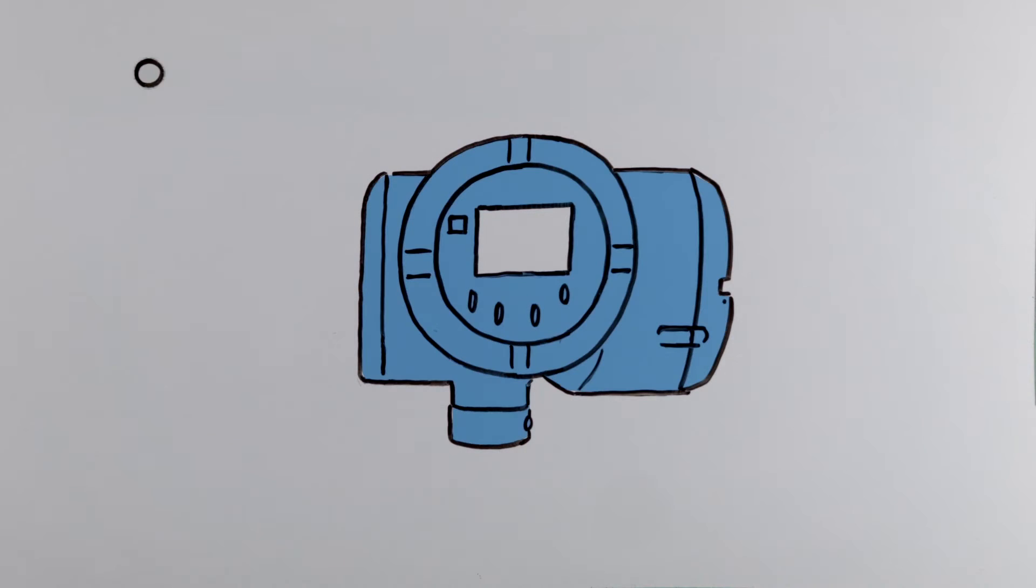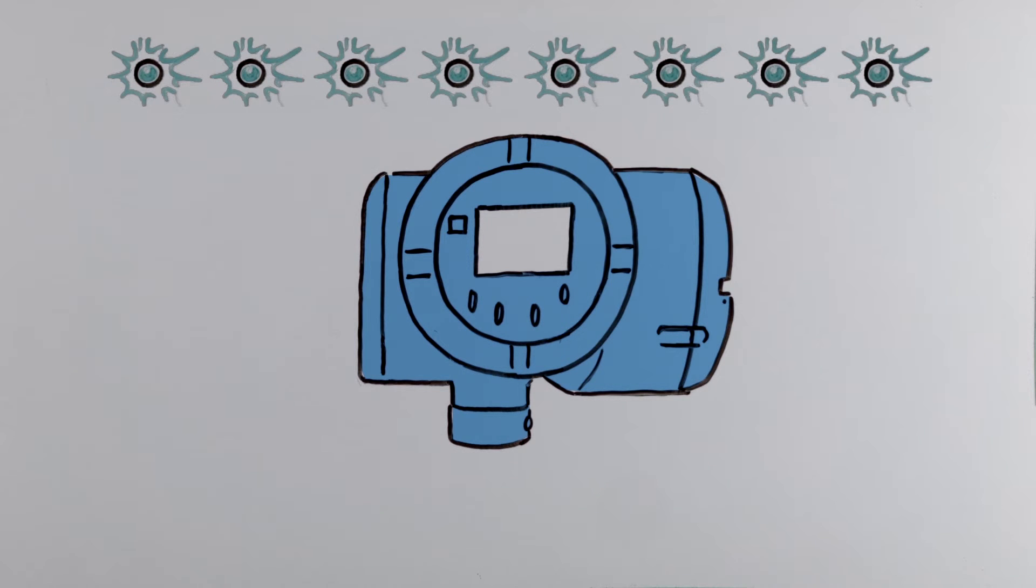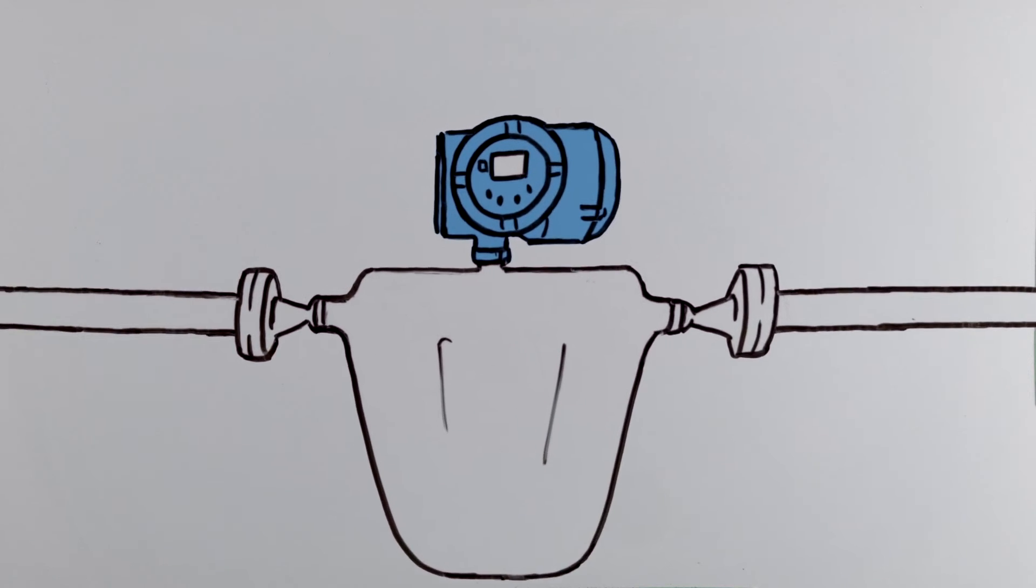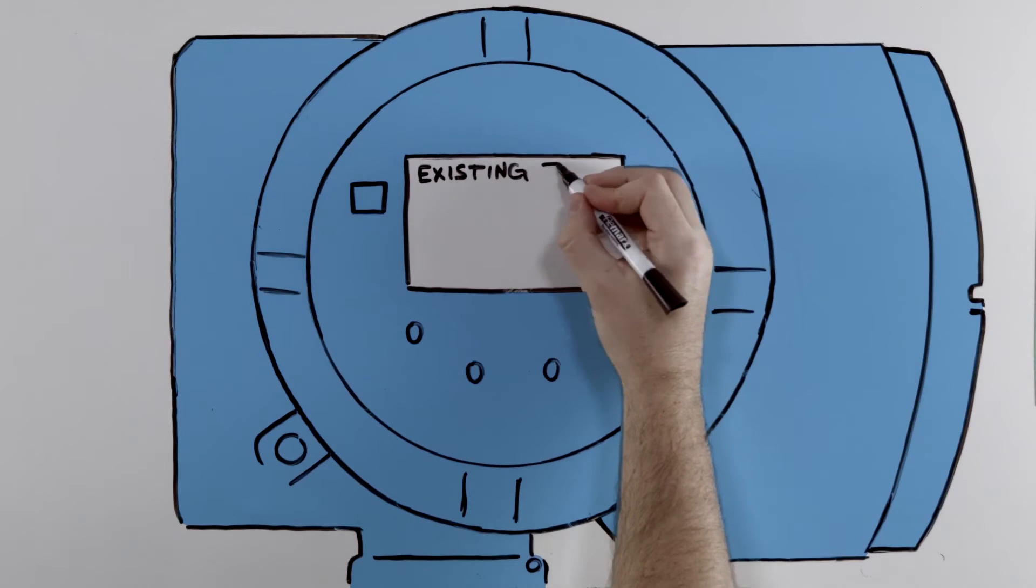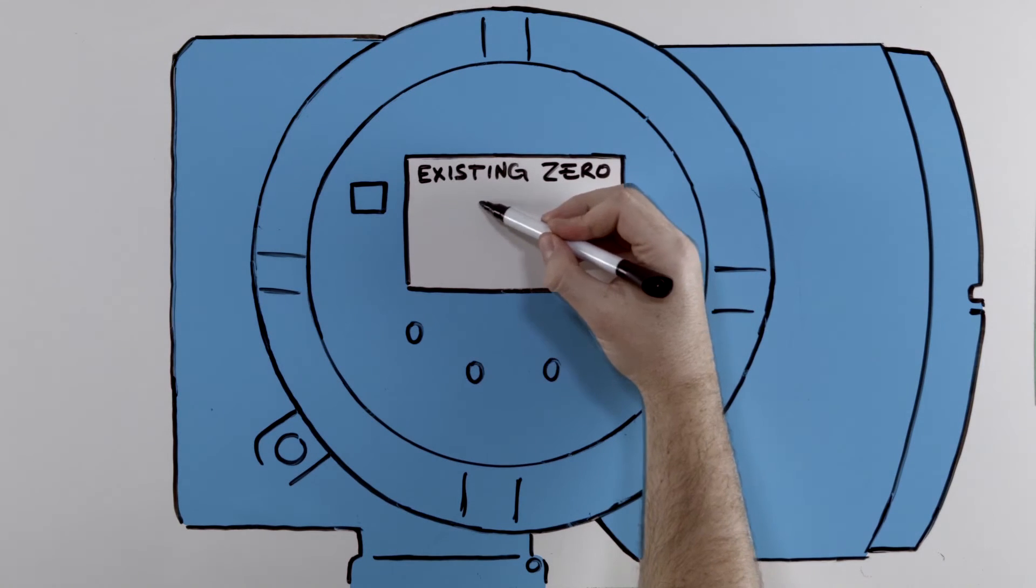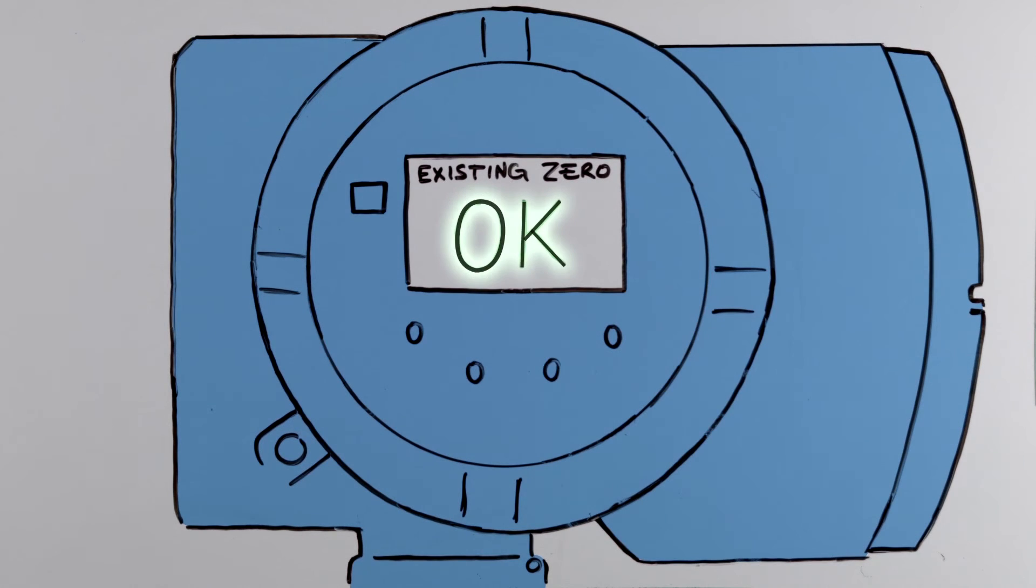If zeroing is justified or required, the tool checks to see if process conditions are quiet and stable enough. For Tina, knowing when not to zero is the best result she can get to prove to the process engineers that the meter is doing its job.